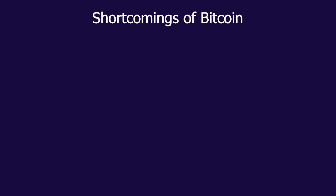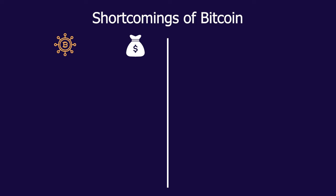There are two broad issues that other blockchains tend to fix. The first one is that Bitcoin is just a store of money — it doesn't really solve any other problem. For example, if someone wants to loan their money or their Bitcoin, there's no easy way to do that or write that in a protocol on top of Bitcoin. And what if someone wants to launch their own token on the Bitcoin network? There's no easy way to do that either.